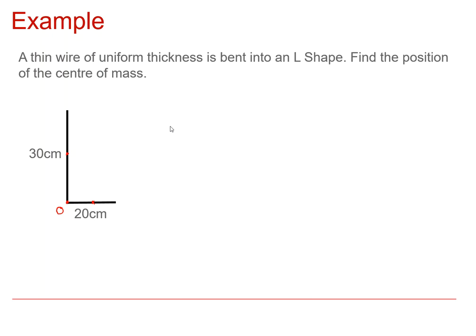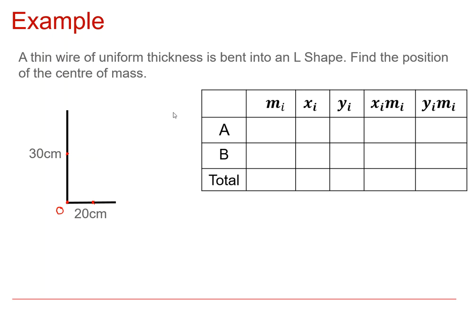And just like the example that we saw in a previous video, we're not told any actual masses here. But what we do know is that the mass of these are going to be proportional to their length. So we'll say that this bar has a mass of 20k, and this one has a mass of 30k. So now we're ready to combine these. We'll do this with the help of a table.